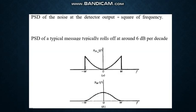The power spectral density of noise at the detector output may be directly proportional to the square of the frequency. Power spectral density of typical message typically rolls off around 6 dB per decade.